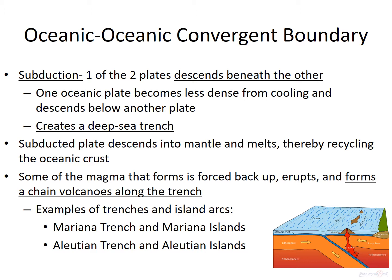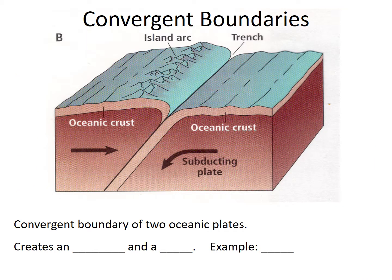This image shows one plate descending below the other. It starts to melt, and in the process some of it is forced up to create islands and volcanoes, while the rest is recycled. A convergent boundary of two oceanic plates creates an island arc and a trench. An example is Japan — those are volcanic islands resulting from two oceanic plates coming together.